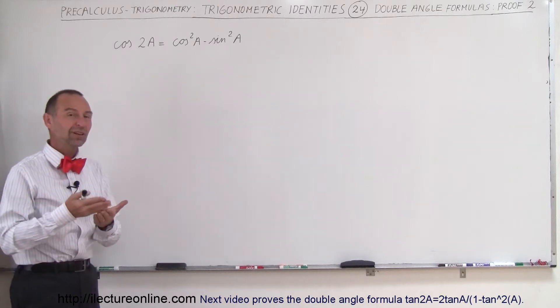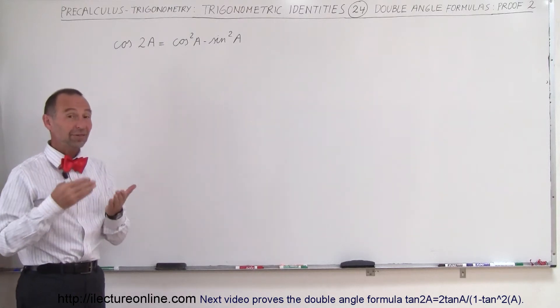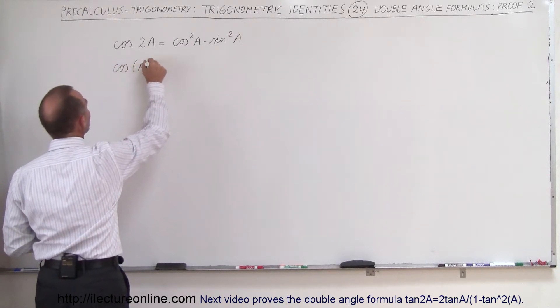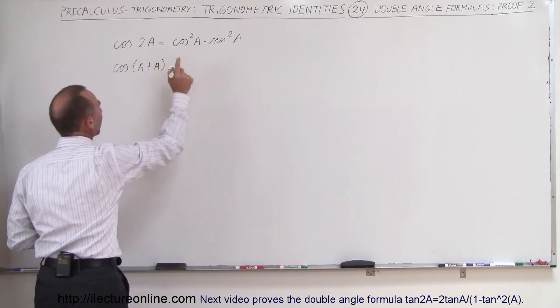What we're going to do is write the cosine of 2A as the cosine of A plus A and see what happens. All right, so let's write this as the cosine of A plus A. And remember,